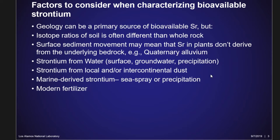First I wanted to remind you of the factors we have to consider when characterizing bioavailable strontium. Most people are aware of these and they're in the literature, but we don't always have solutions. Geology can be a primary source of bioavailable strontium, but not always, and soil isotope ratios are often quite different from whole rock. Surface sediment movement can mean strontium in plants doesn't come from the underlying bedrock — areas labeled quaternary alluvium on maps can be problematic. Strontium also enters the biosphere through different types of water, local or intercontinental dust, marine-derived strontium near coastlines, and modern fertilizers.